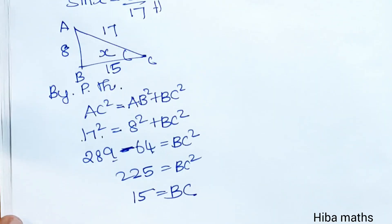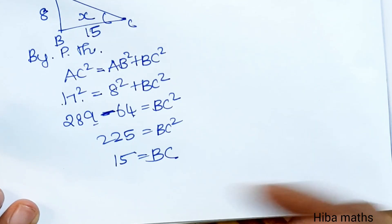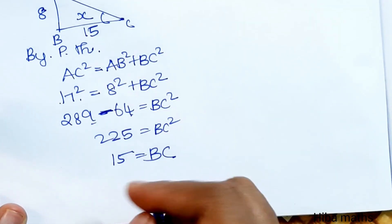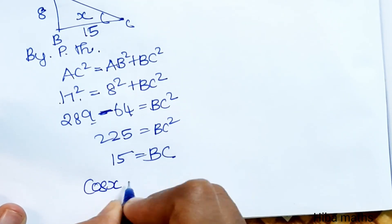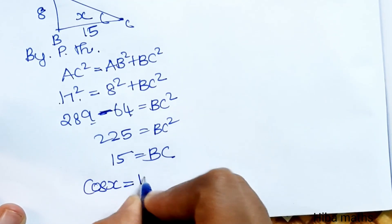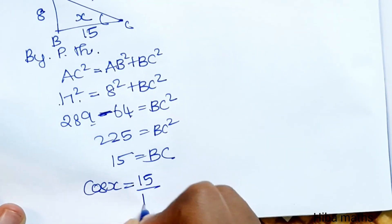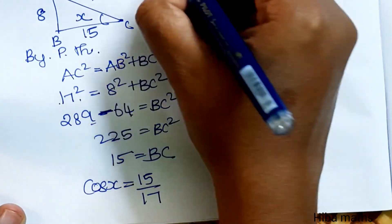Now cos x is equal to adjacent by hypotenuse. Since x is in the first quadrant, cos x is positive and equals 15 by 17.